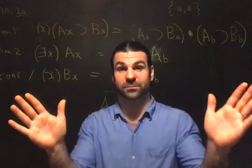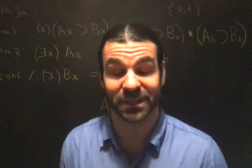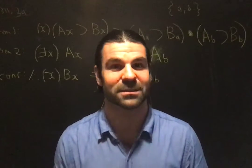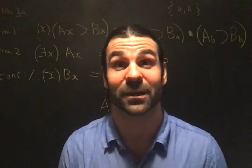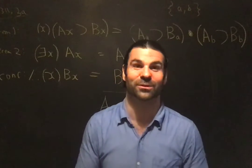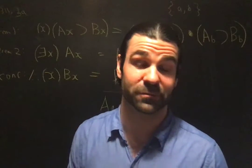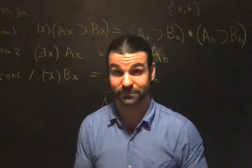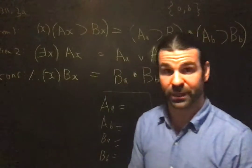If that doesn't work — if you can't find a counterexample in a domain of three individuals — in the exam, I'm going to give you an argument that is invalid. So if you can't find one in three individuals, go back and find your mistake. Start with two individuals; if you can't find a counterexample there, go to three individuals. If you can't find one there either, you've made a mistake.